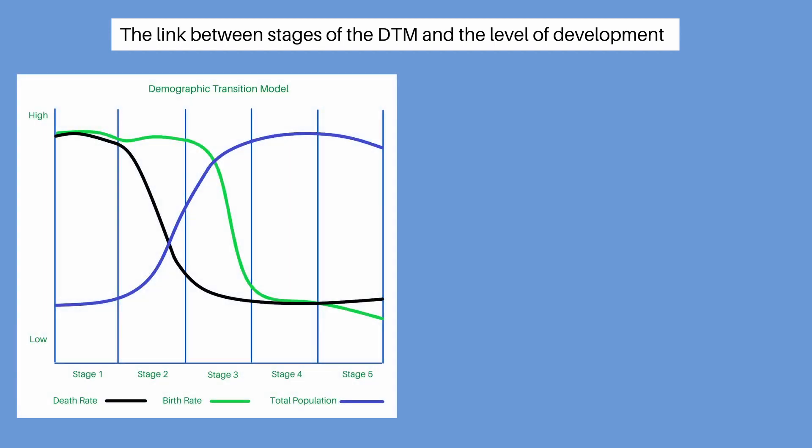The Demographic Transition Model shows changes over time in a population. The total population responds to changes in birth and death rates. Where there is a difference between birth and death rates, the population total will change.